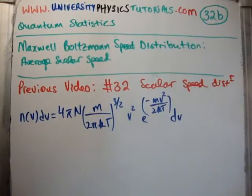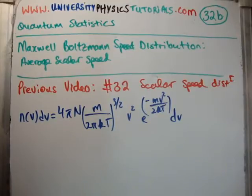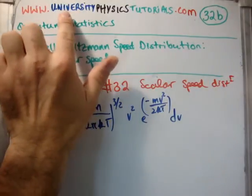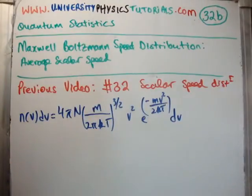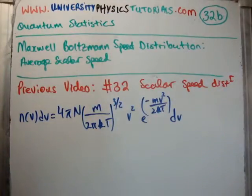Okay, in this video I'm going to continue on with tutorials on quantum statistics. This is video number 32, part B, and I'm going to talk about the Maxwell-Boltzmann speed distribution. Specifically, I'm going to show you how to get the average scalar speed. I'd like to draw your attention to my website, universityphysicstutorials.com. So the previous video to this was number 32, where I derived the scalar speed distribution from Maxwell-Boltzmann classical particles.